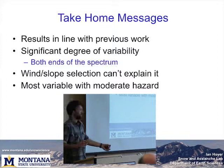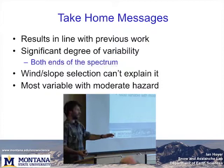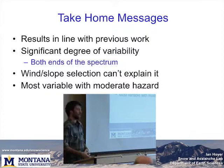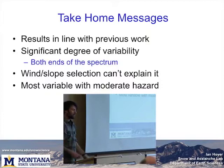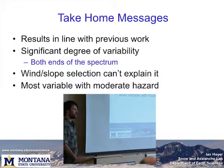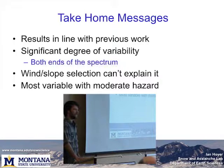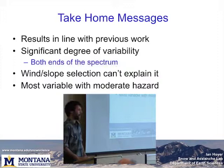The take-home message is that these results are in line with previous spatial work — there's a big range of variability. Some days you get totally uniform results, some days very variable. I'm also seeing significant variability at both ends of the spectrum — not just false stables when 27 propagate and one doesn't, but also days when 27 don't propagate and one does. It's most variable with moderate hazard, which is a tough message because that's when you want stability tests to work most for you.